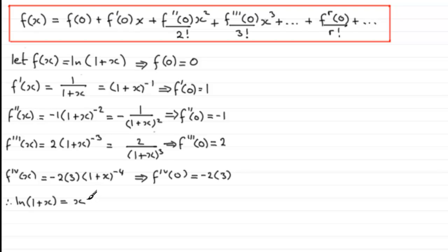And then, for the next term, f''(0) is -1, so we get -x²/2!. Minus x²/2!. Next up, we're going to have plus f'''(0), which is 2. We're going to have 2x³, then over 3!. And it'll be plus 2x³/3!.